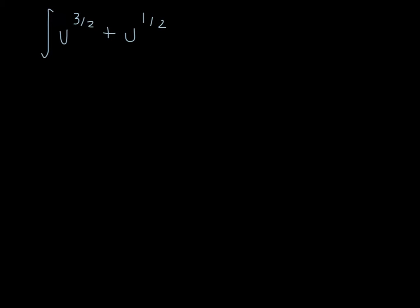So now that we have this, let's split it up into integral of u to the 3 halves and integral of u to the 1 half. Put a little plus sign in there. And that gets us 2 fifths times u to the 5 halves plus 2 thirds u to the 3 halves.